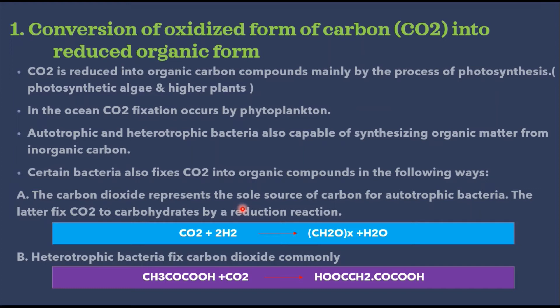In the first step, carbon dioxide is reduced into organic compounds mainly by the process of photosynthesis. Photosynthesis may occur by photosynthetic algae, phytoplankton, or higher plants. The photosynthetic algae and higher plants are the most important agents of CO2 fixation. In the ocean, the major carbon-fixing plant forms are free-floating microscopic algae called phytoplankton, estimated to fix annually about 1.2 × 10¹⁰ tons of carbon, while nearly 1.6 × 10¹⁰ tons of carbon is fixed annually by photosynthetic terrestrial plant life.